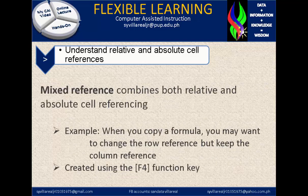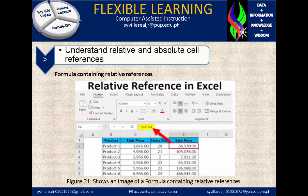A mixed reference combines both relative and absolute cell referencing. For example, when you copy a formula, you may want to change the row reference but keep the column reference. To create an absolute cell reference, you can use the F4 function key on the keyboard. Figure 21 shows an image of a formula containing a relative reference.